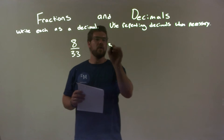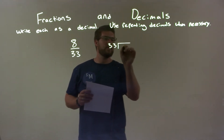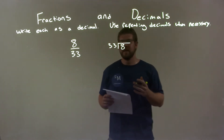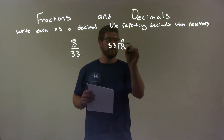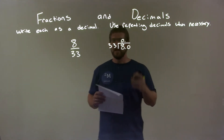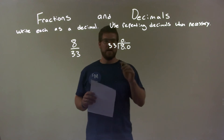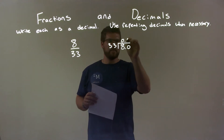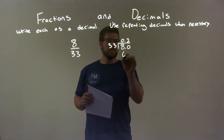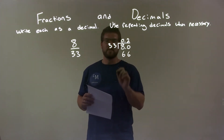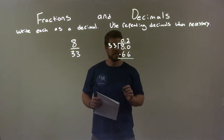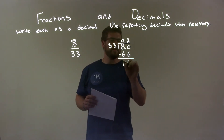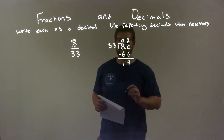I'm going to use long division here. So, 33 goes into 8. Well, can 33 go into 8? No. So we have to go to another place value here, and we have 80. Now, 33 can go into 80 two times. Two times 33 is 66. So we subtract that. 80 minus 66 comes out to be 14.